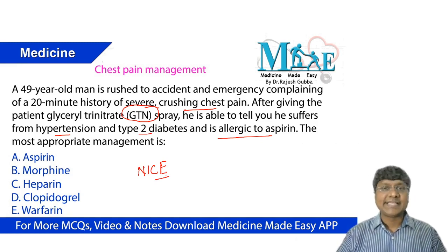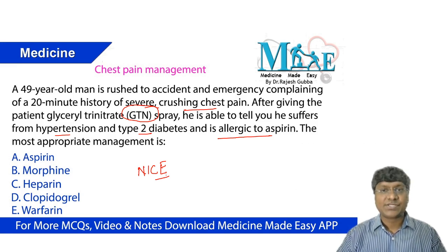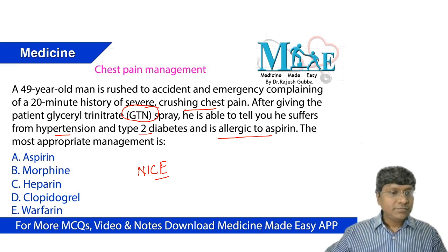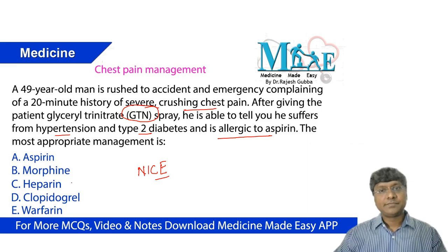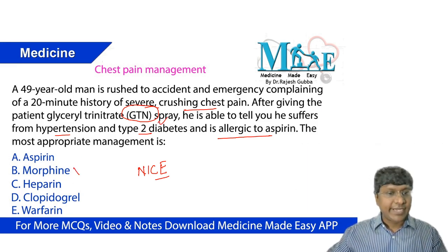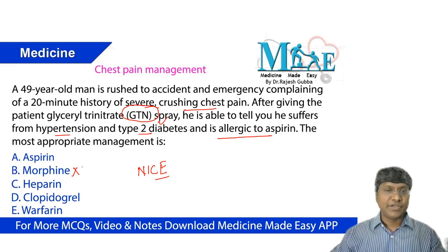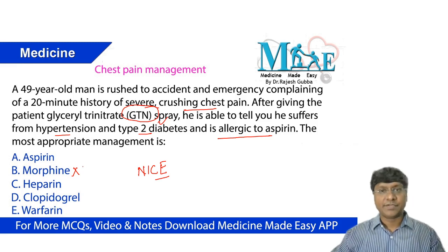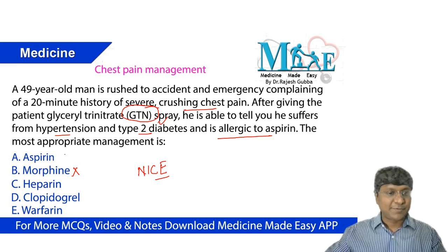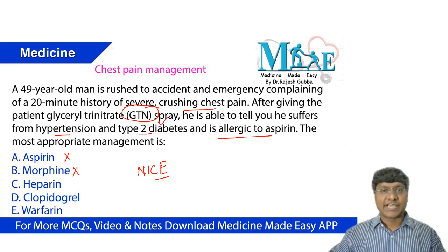For chest pain, the NICE guidelines recommend two important drugs: one is nitrates and the other one is morphine. But already you have given nitrates, so it is not required to give morphine again — either of these drugs you can give. When you have given nitrates, don't again supplement the patient with morphine. The patient is allergic to aspirin, so you cannot give aspirin.